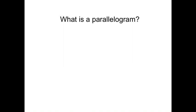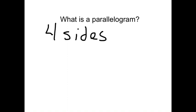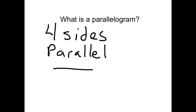A parallelogram is a special kind of polygon that always has four sides, and those four sides are always parallel. Parallel means that the sides go in the same direction. For example, these two sides go in the same direction, and this side and this side go in the same direction. This is a parallelogram.